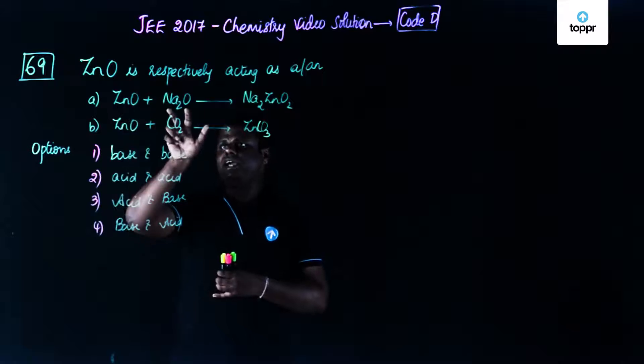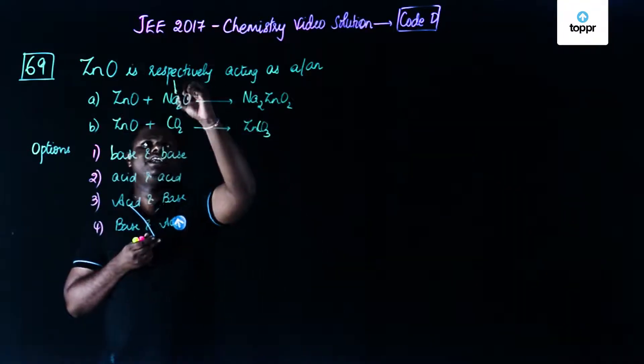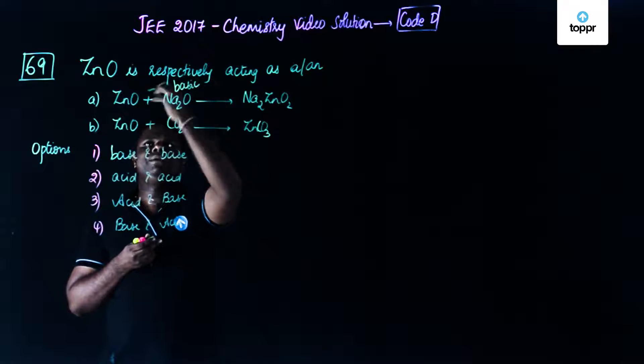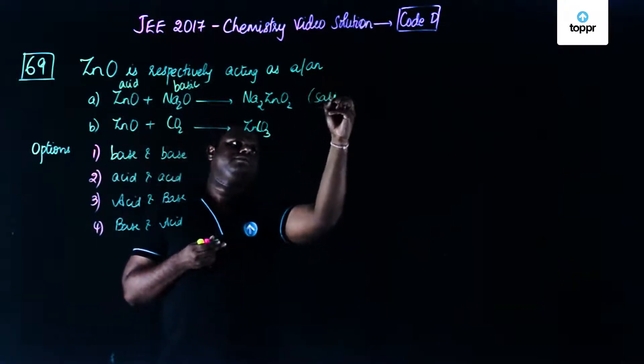Zinc oxide and Na2O forms a salt. Sodium oxide is basically a basic oxide. That means zinc oxide should be acidic in order to form a salt, correct?